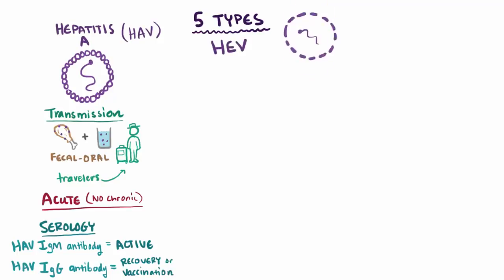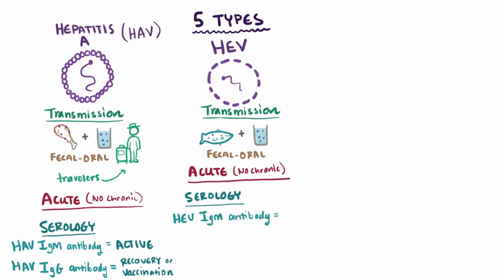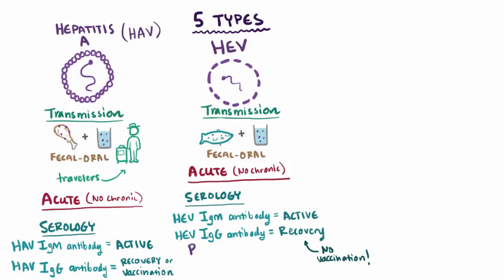Hepatitis E virus is actually pretty similar to HAV, with the same fecal-oral route of transmission, and is most commonly acquired through undercooked seafood or contaminated water. It also doesn't have much of a chronic state, and HEV-IgM antibodies indicate an active infection, while HEV-IgG is protective and signals recovery, just like HAV. Two big differences to note: only HAV has the option for immunization, and HEV infection in pregnant women can be very serious and can lead to acute liver failure, also sometimes called fulminant hepatitis.